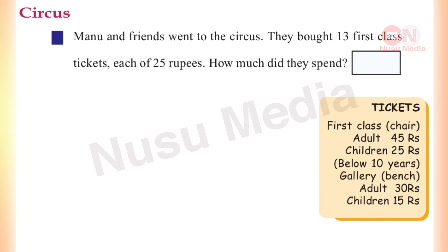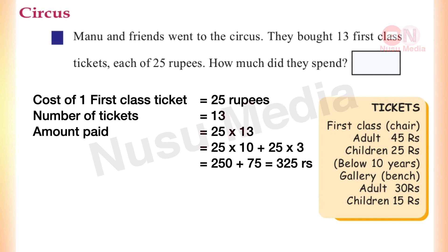The gallery ticket is 30 rupees. Children's ticket is 15 rupees. The cost of one first class ticket is 25 rupees. Number of tickets is 13. Amount paid: 25 into 13. 25 into 10 plus 25 into 3: 250 plus 75 is equal to 325 rupees.